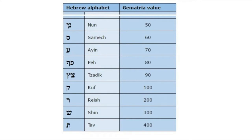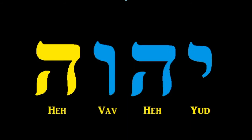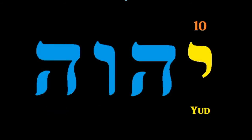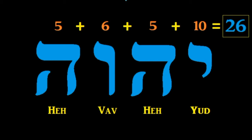Once we apply this simple rule to assign a numerical value to each letter of the alphabet, we can compute the value of a word by adding the values of its letters. For example, the word we pronounce Jehovah — the name of God — is written with 4 Hebrew letters: Yud, Heh, Vav, Heh. Their respective gematria values are 10, 5, 6, 5. So the gematria value of Yahweh is 10 + 5 + 6 + 5 = 26. This is the gematria value of the name of God.